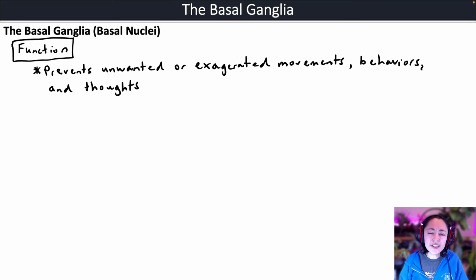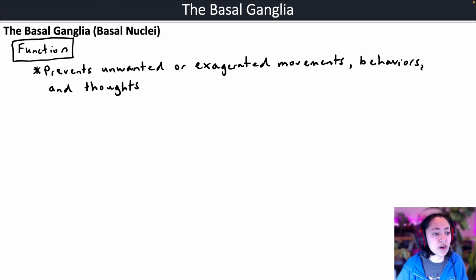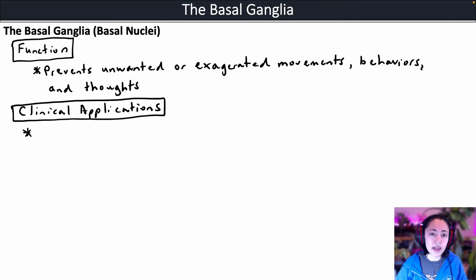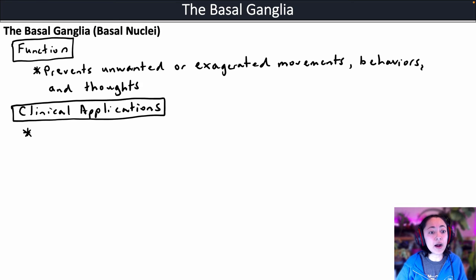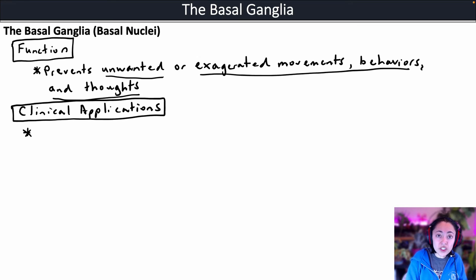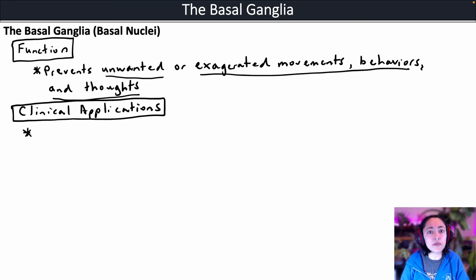By understanding this, you could think of some clinical applications associated with the structures of the basal ganglia. Disorders that are characterized by unwanted or exaggerated movements, behaviors, and thoughts may be associated with damage to structures within the basal ganglia.